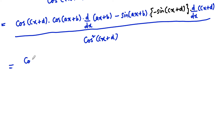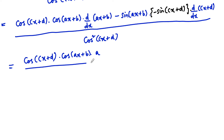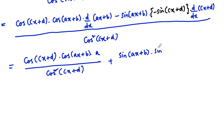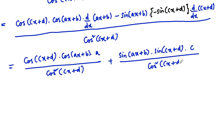Upon simplifying, we can write: cos(cx + d) into cos(ax + b) into a, upon cos squared(cx + d). And minus of minus gives plus, so plus sin(ax + b) into sin(cx + d) into c, upon cos squared(cx + d).